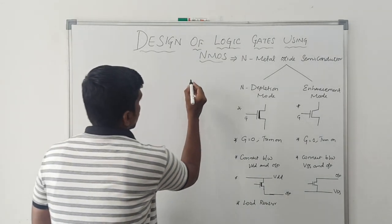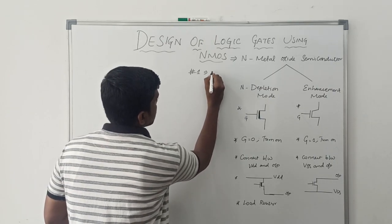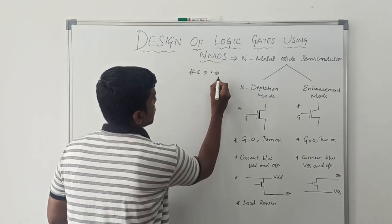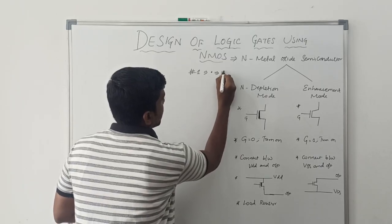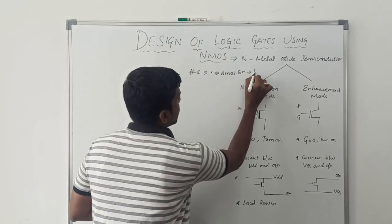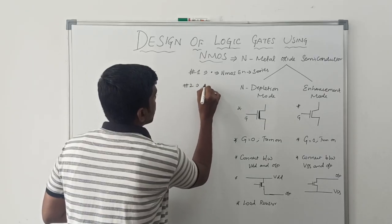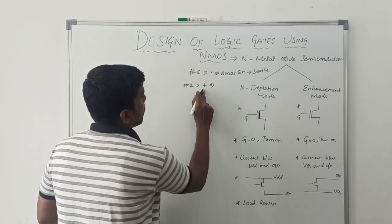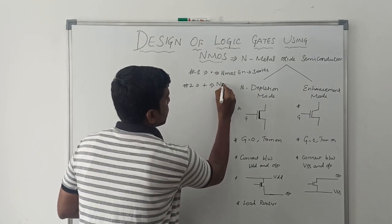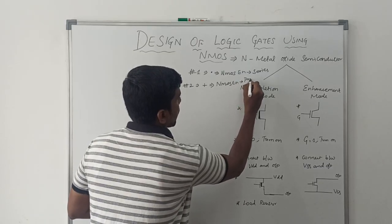Let me write the rules clearly. Rule number one: if the dot operator is present in the boolean expression, NMOS enhancement mode transistor is connected in series. Rule number two: if the sum operator is present in the boolean expression, NMOS enhancement mode transistor is connected in parallel.